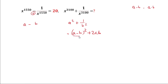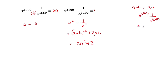Here we know the value of a minus b, which is 20. So we can write it as 20 square plus 2ab. Now ab means x to the power 1550 multiplied by 1 by x to the power 1550, which cancels to give 1. So 20 square is 400 plus 2 times 1, means the answer is 402. Note that earlier it was minus and now it is plus, so the formula for this type of problem is k square plus 2.